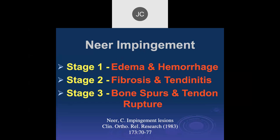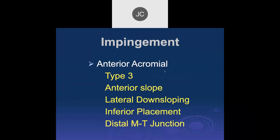Let's go through this because it's still an important concept — like a lot of important concepts, it may come back. Neer described three stages of impingement: first, edema and hemorrhage within the tendon; then fibrosis and tendonitis, basically chronic degenerative disease; and then bone spurs and complete tendon rupture.